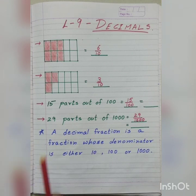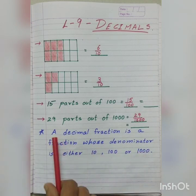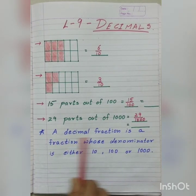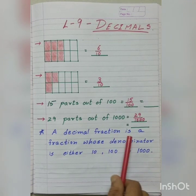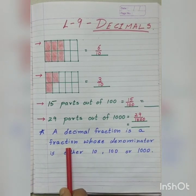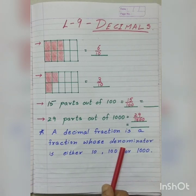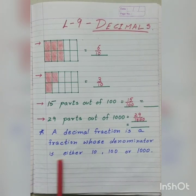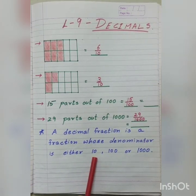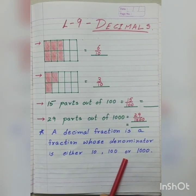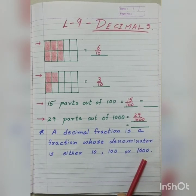Such fractions are called decimal fractions. Thus, all of you, please repeat after me: A decimal fraction is a fraction whose denominator is either 10, 100 or 1,000.